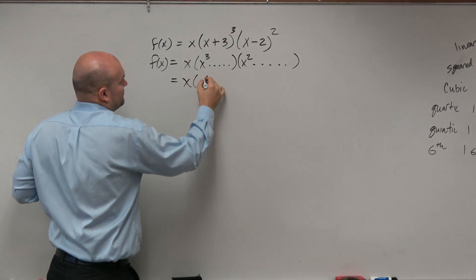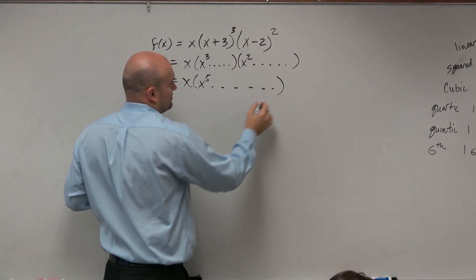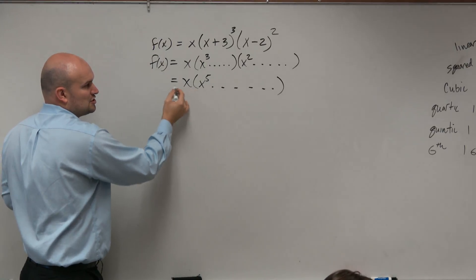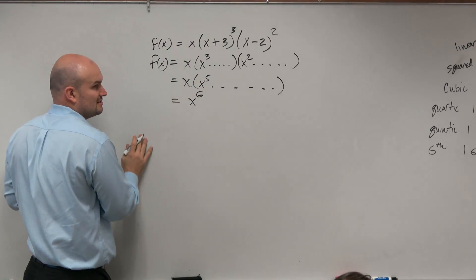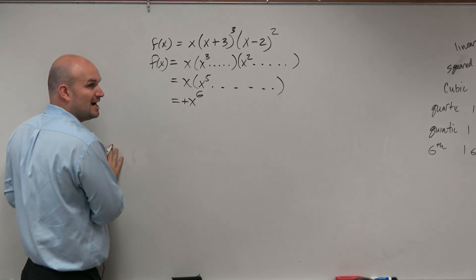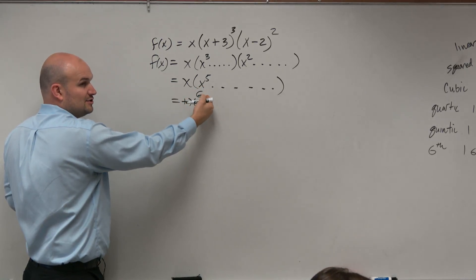So, it's x times x to the fifth. Therefore, the largest power of x times x to the fifth is x to the sixth. Again, that's a positive coefficient. You have it to an even power.